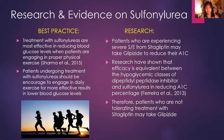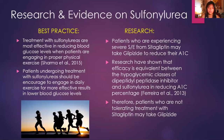On the research side of this drug class, I found that patients experiencing severe side effects from sitagliptin may take glipizide to reduce their A1C levels. Research has shown that the efficiency is equivalent between the dipeptidyl peptidase inhibitor class and sulfonylureas in reducing A1C percentages. Therefore, patients who are not tolerating treatment with sitagliptin may take glipizide instead because they have the same equivalency of efficacy.